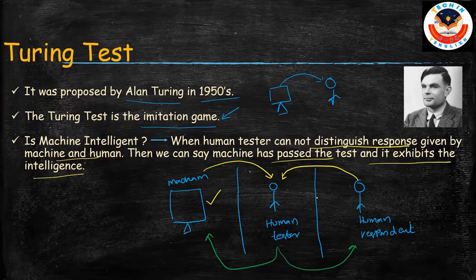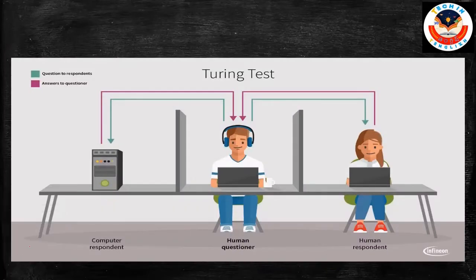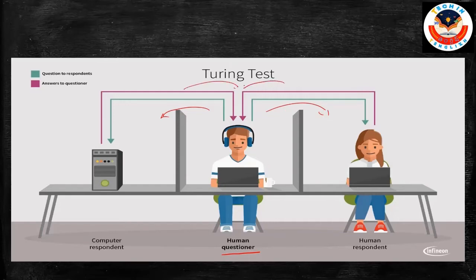It is a demonstration of the Turing Test — I hope it is clear. In the next slide, I am showing the same thing with a clearer figure. Here we have a human questioner who does not know which room has the machine. He is sending questions to both the human and the machine, and getting responses. If he is not able to distinguish which responses come from the human and which from the machine, then we can say our machine is exhibiting intelligence. That is what the Turing Test is.